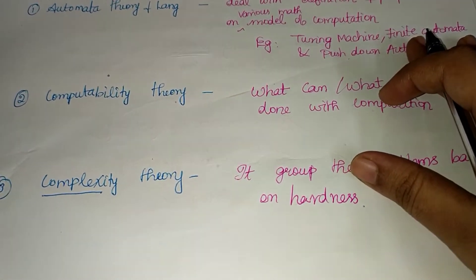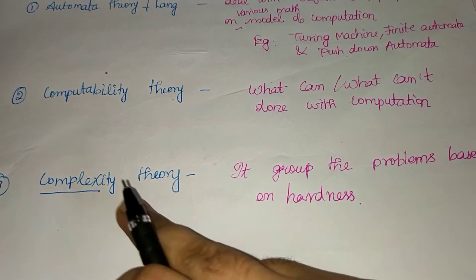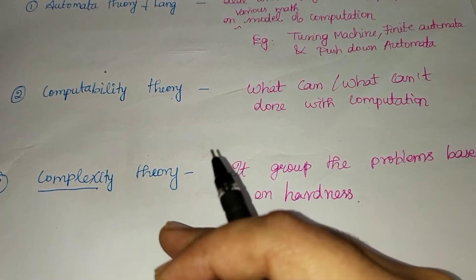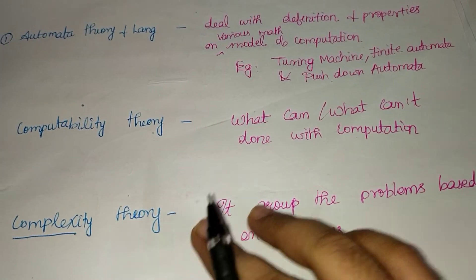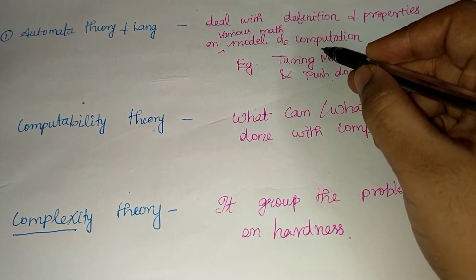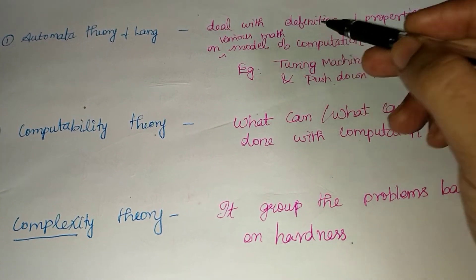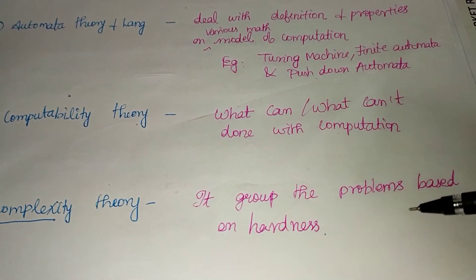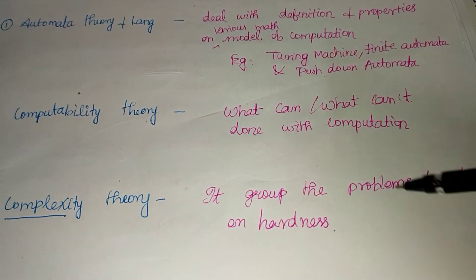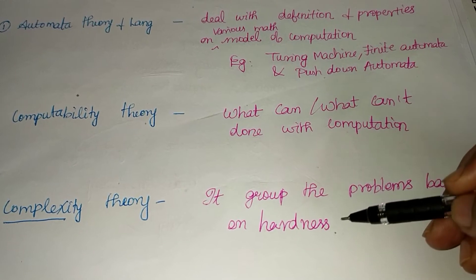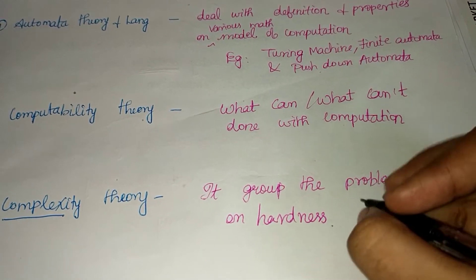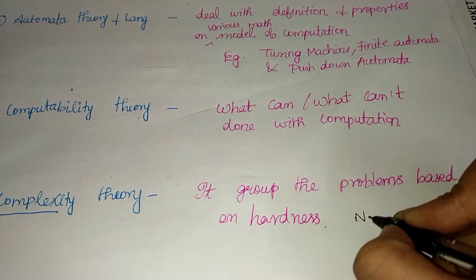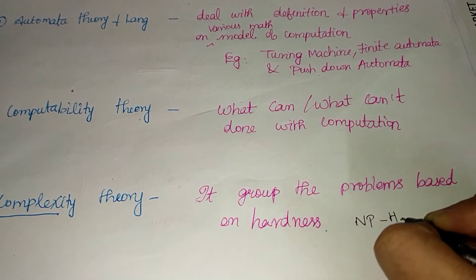The third branch is Complexity Theory. The name implies complexity and hardness. In this model, we solve problems and classify them — including NP-hard problems.